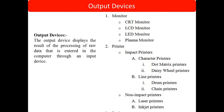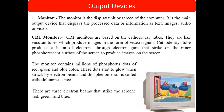Next are output devices. Output devices are used to display the output. We use monitor, printer, and projector as output devices. Monitors are divided into four types: CRT, LCD, LED, and plasma. Printers are divided into two types: impact printer and non-impact printer. We will discuss projectors as well. Let us go through each one by one.